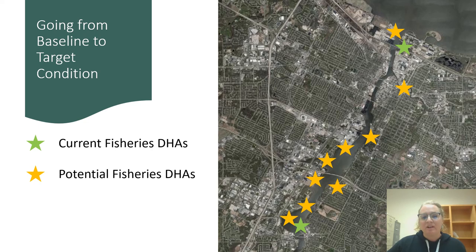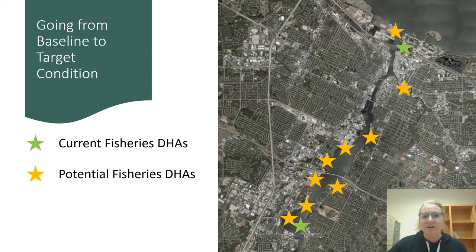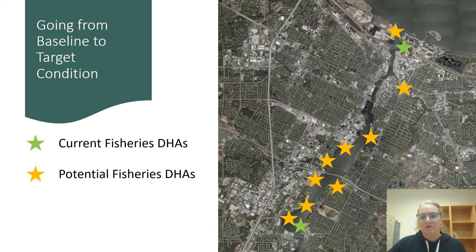So how do we determine our baseline condition and move the needle to our target conditions? We identified three locations in the Fox River already functioning as very important, high-quality fishery areas, largely determined through expert opinion supported by data — two areas near the De Pere Dam and another near the mouth of the river and some backwater slough habitat, represented as green stars on the map. We also identified many other sites providing some level of habitat but with room for improvement, targeted for additional restoration activities, identified as gold stars on the map. Once we identified our target DHA sites, we determined which target fish species to associate with each designated habitat area to guide restoration actions. Some of the Fox River target species include sturgeon, walleye, lake whitefish, channel or flathead catfish, several species of centrarchids, and muskie.